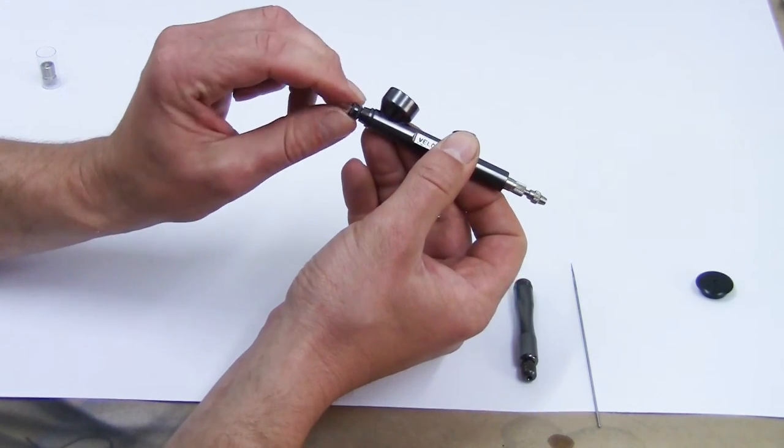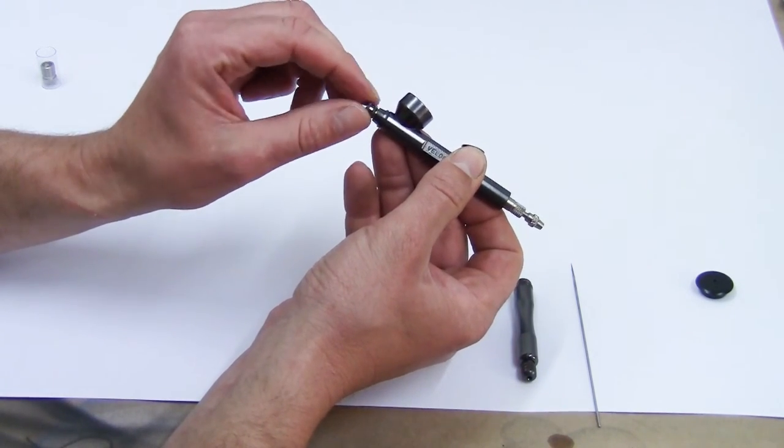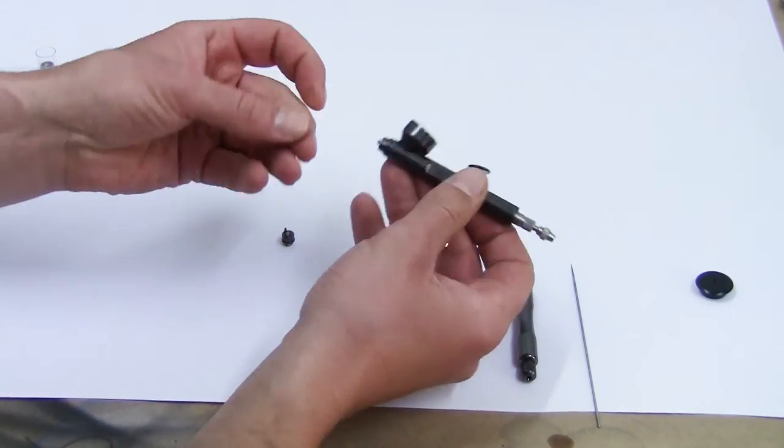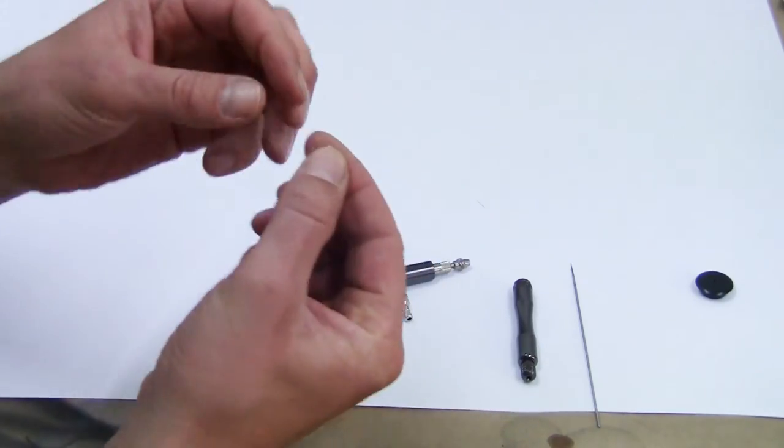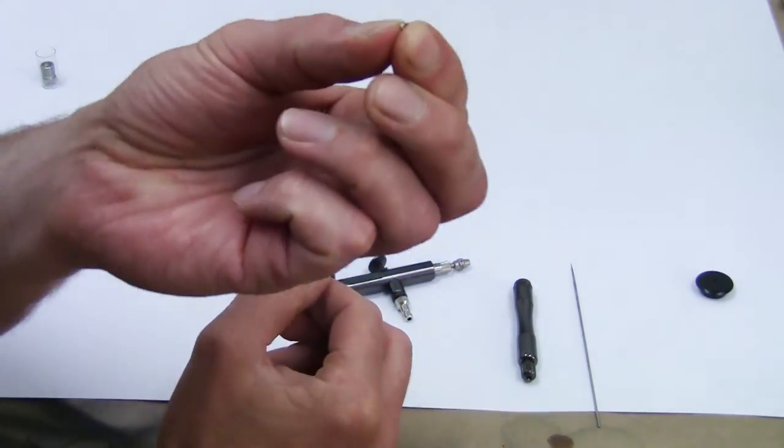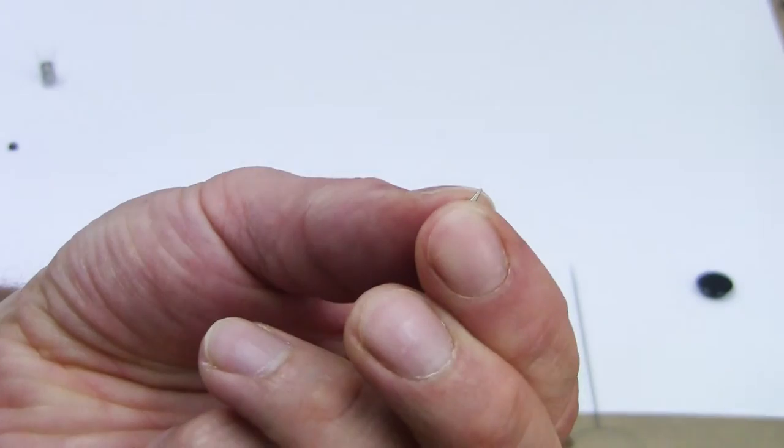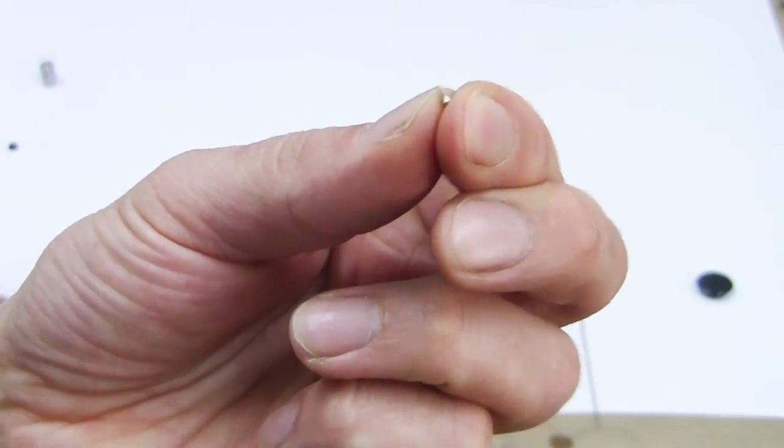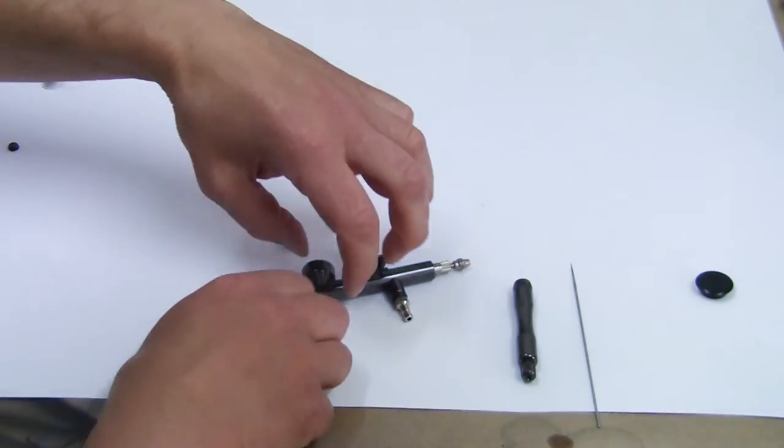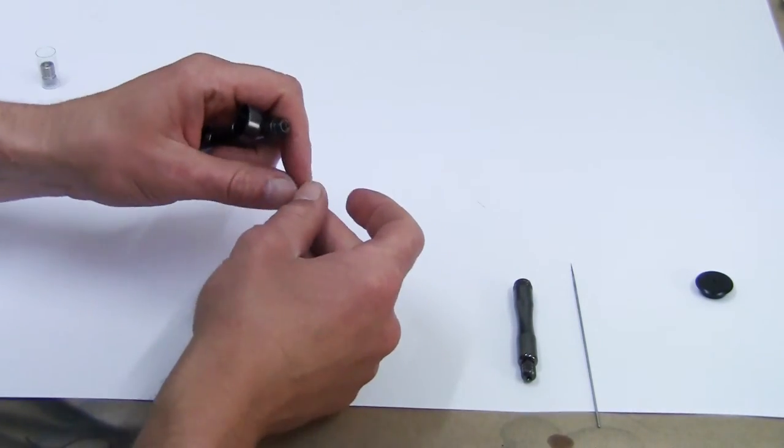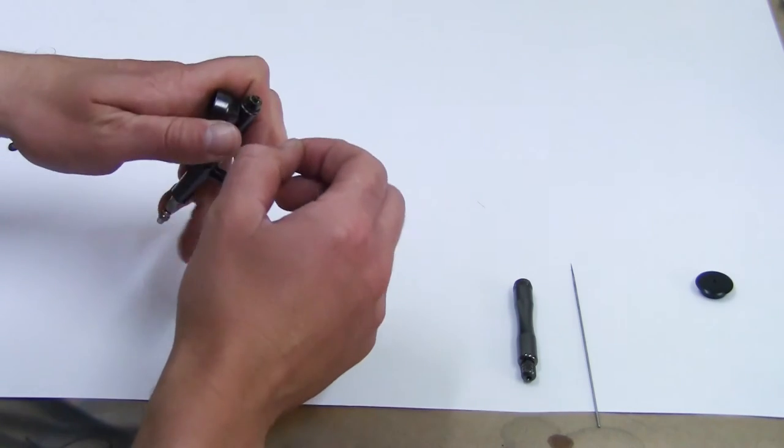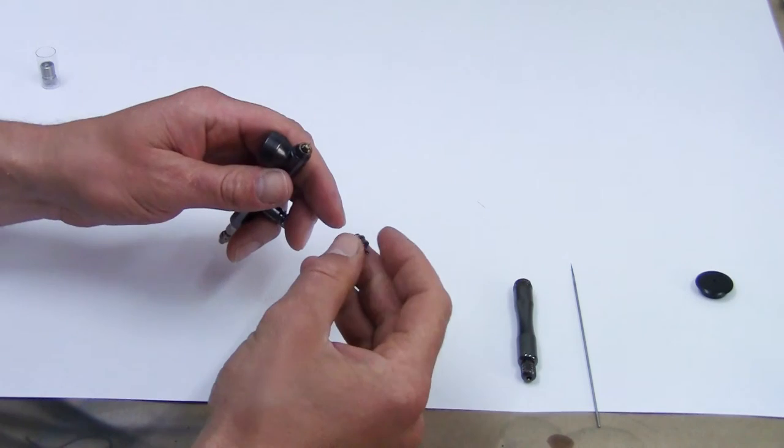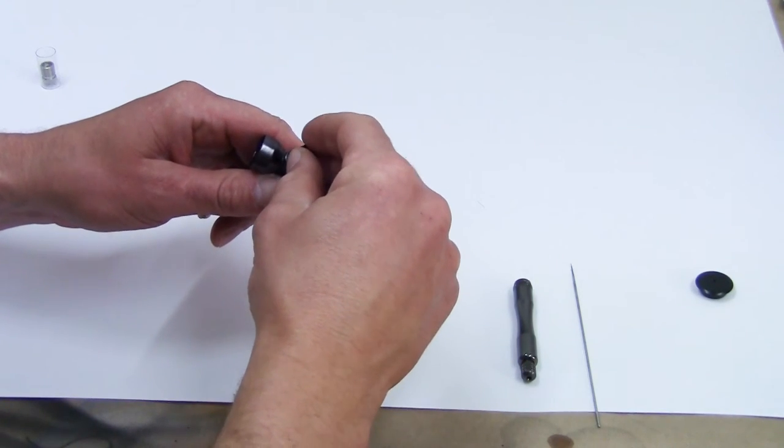The needle comes out, as you can see. Here we have our very small 0.21 millimeter push-in nozzle. Now it's pushed back in and the air cap is screwed back on.